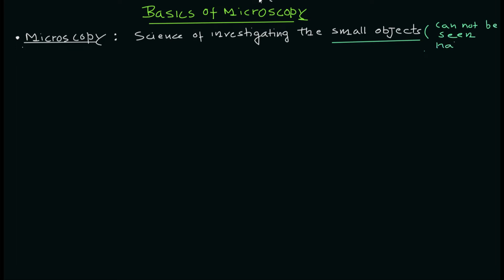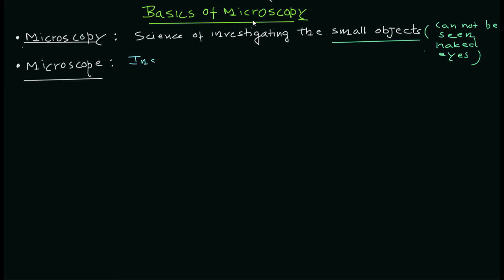When we talk about small objects, we mean objects whose details we cannot see with the naked eye — specifically the features present in those objects. Our eyes have a limited resolution power, so we cannot see objects beyond that limit. We need instruments, and those instruments are the microscopes.